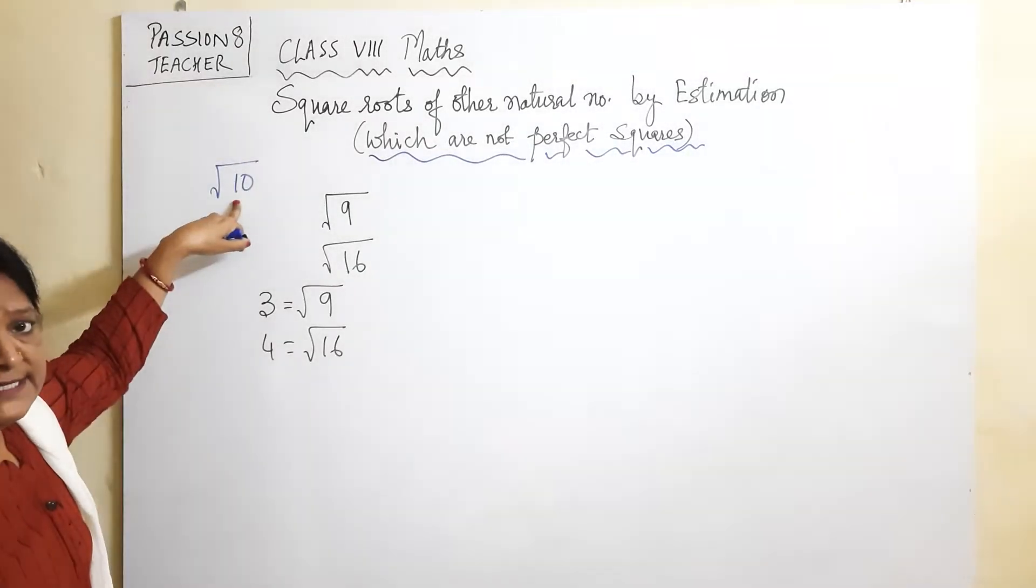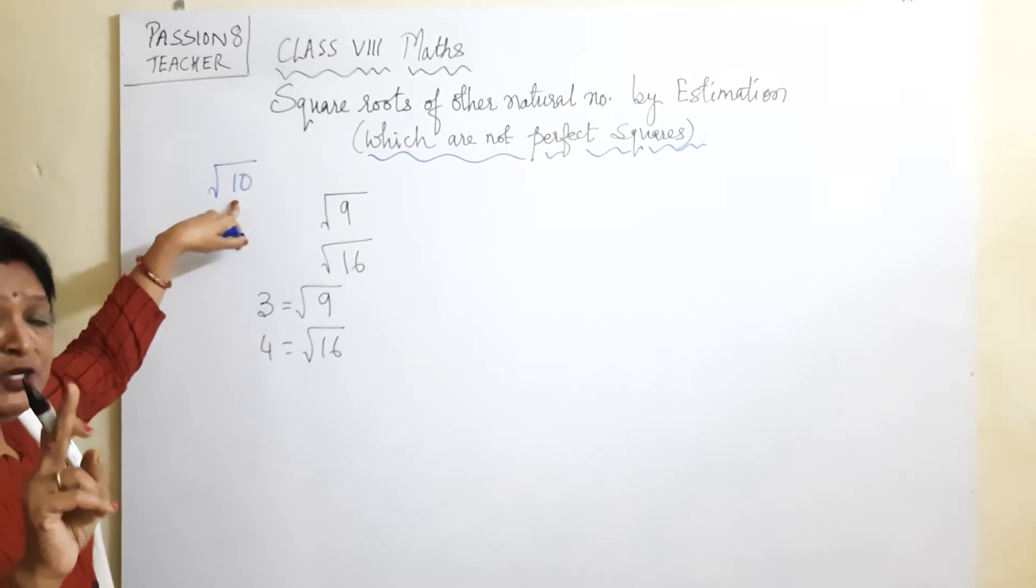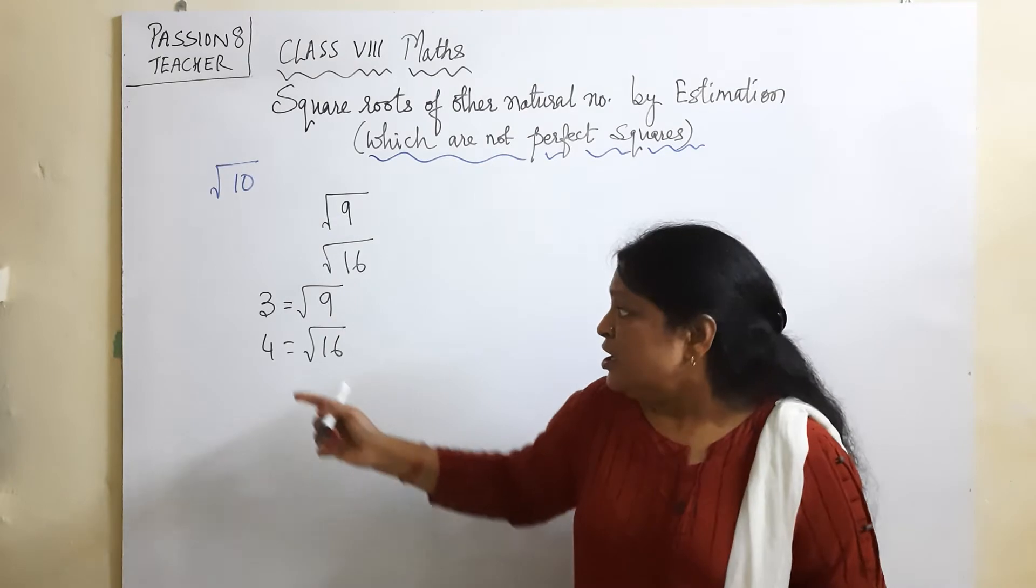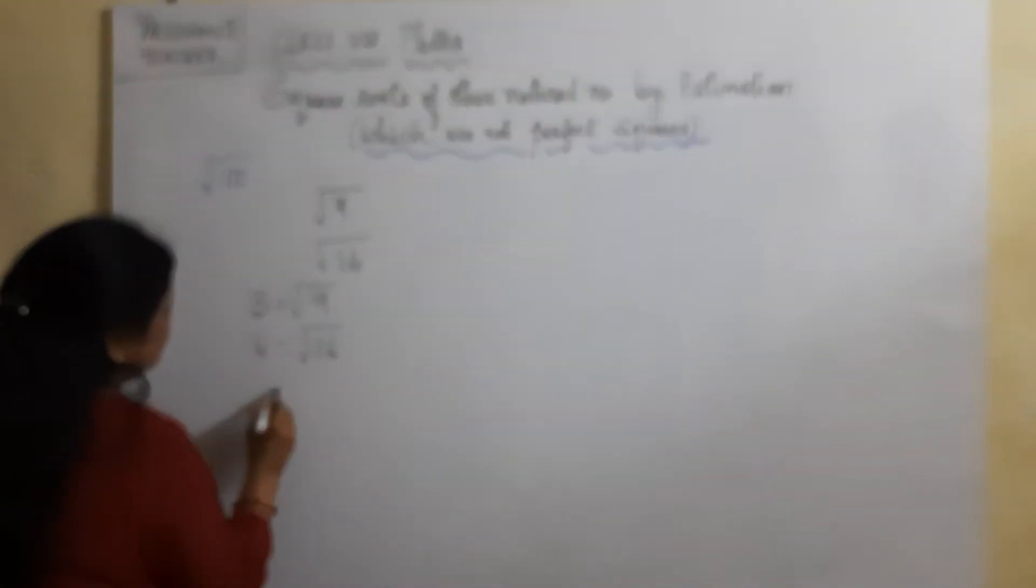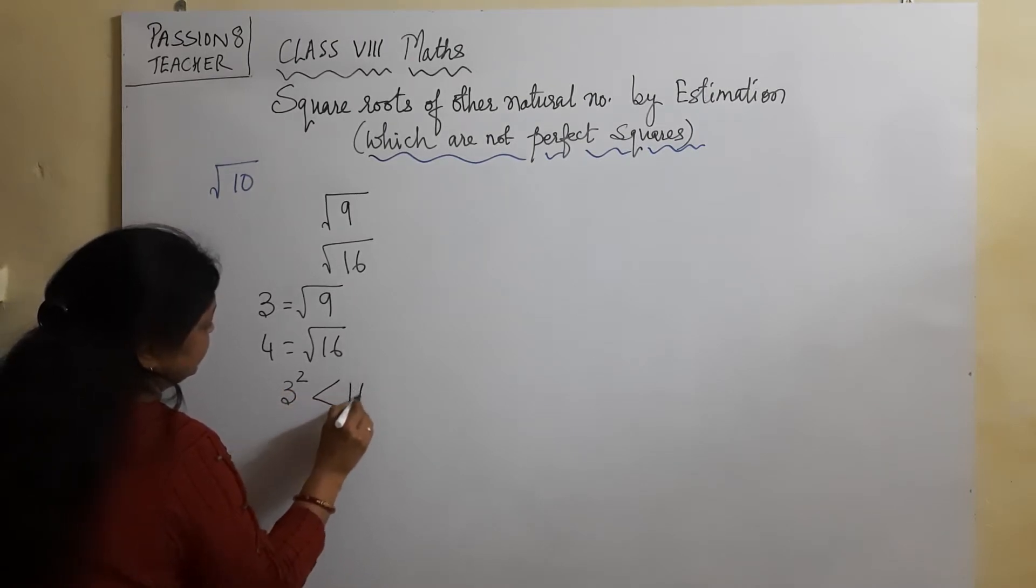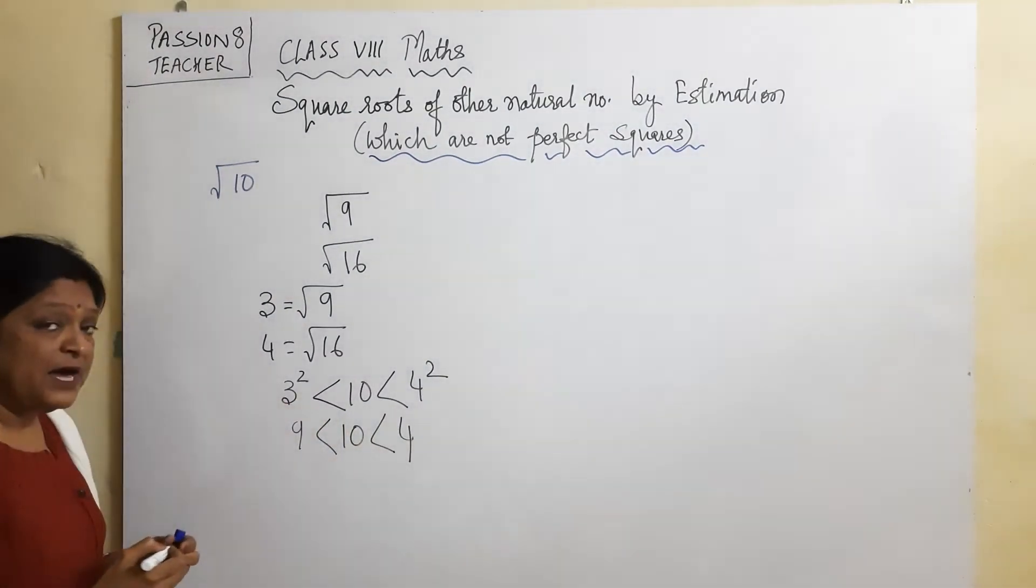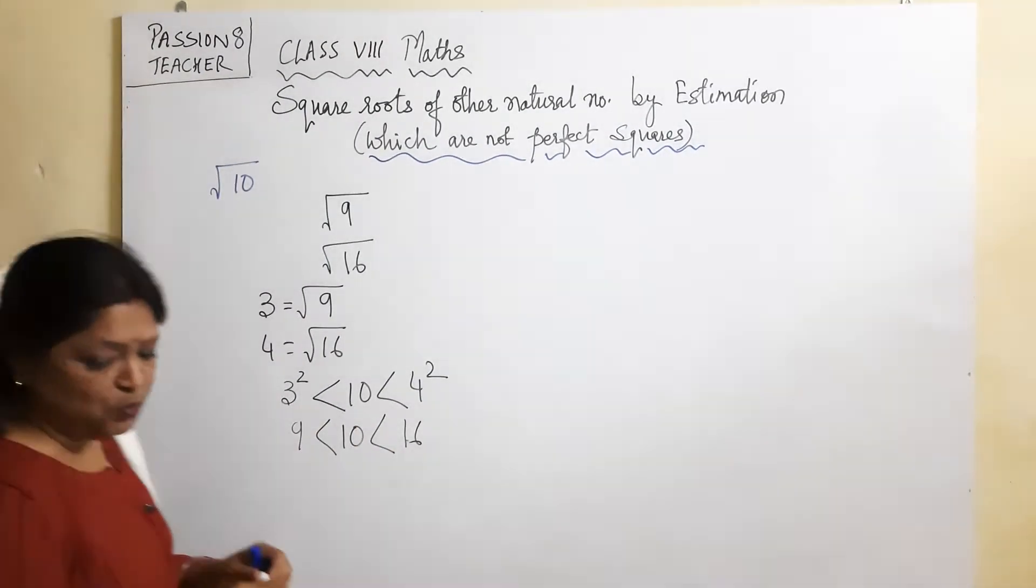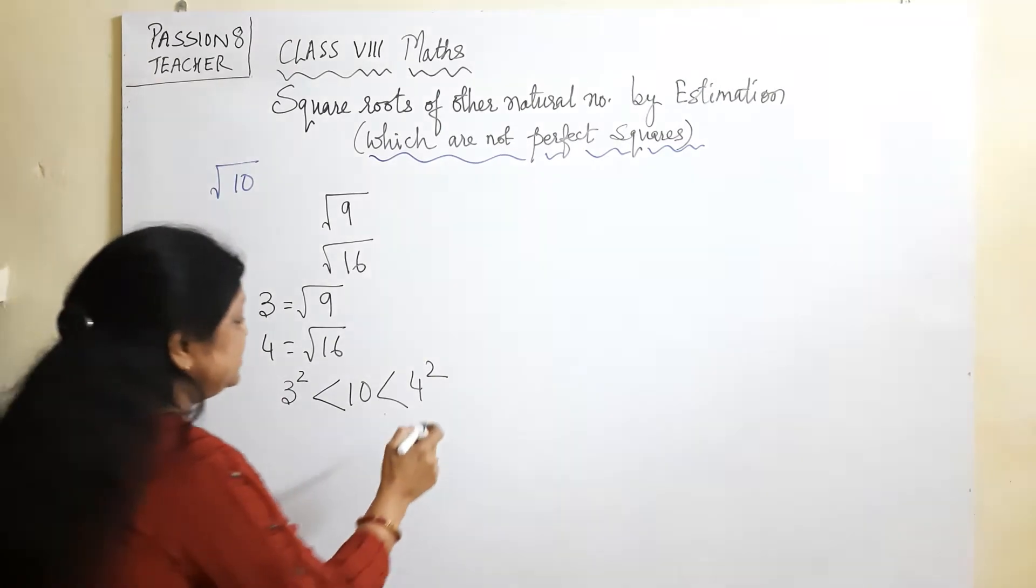This is 9, not 10. 1 square is 1, 2 square is 4, 3 times 3 is 9, so square root of 9 is 3. 4 times 4 is 16. So it's not 3 or 4. If 3 square is 9, then 4 square is 16. 3 square, which is smaller than 10, and 10 is smaller than 4 square. Because 9 is smaller than 10, it is smaller than 16. So 3 square, which is smaller than 10, comes under 3 and 4. It lies between 3 and 4.